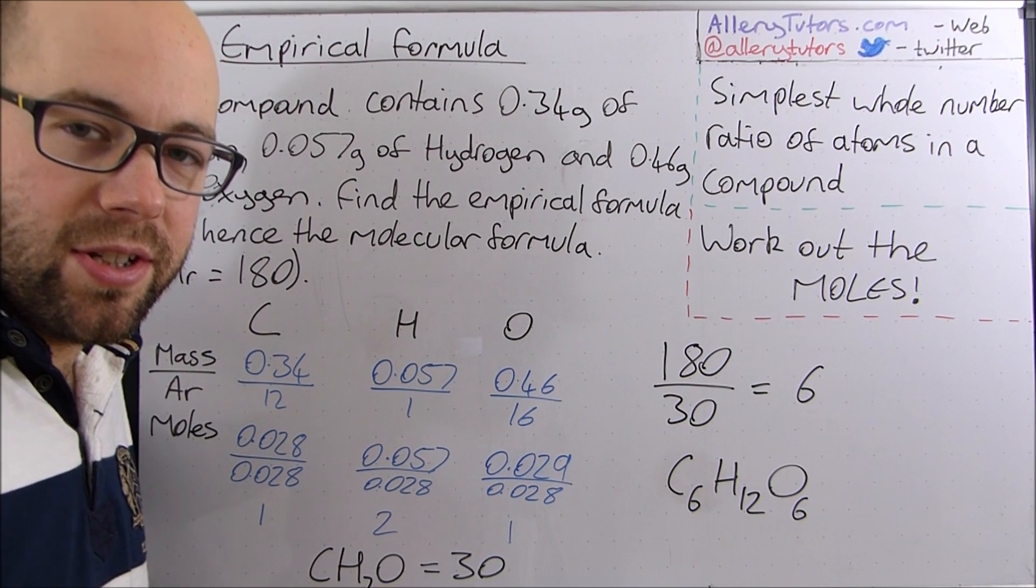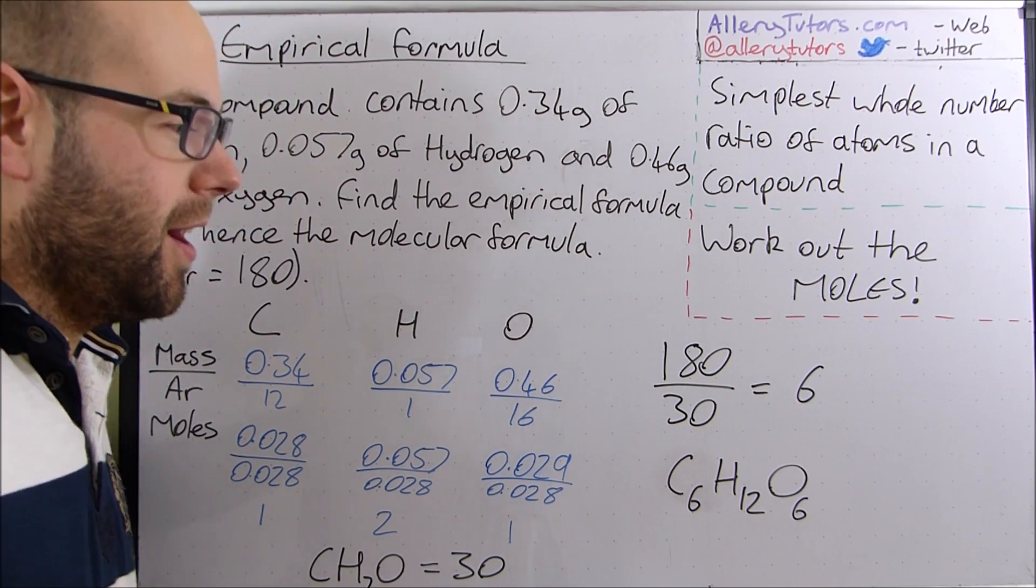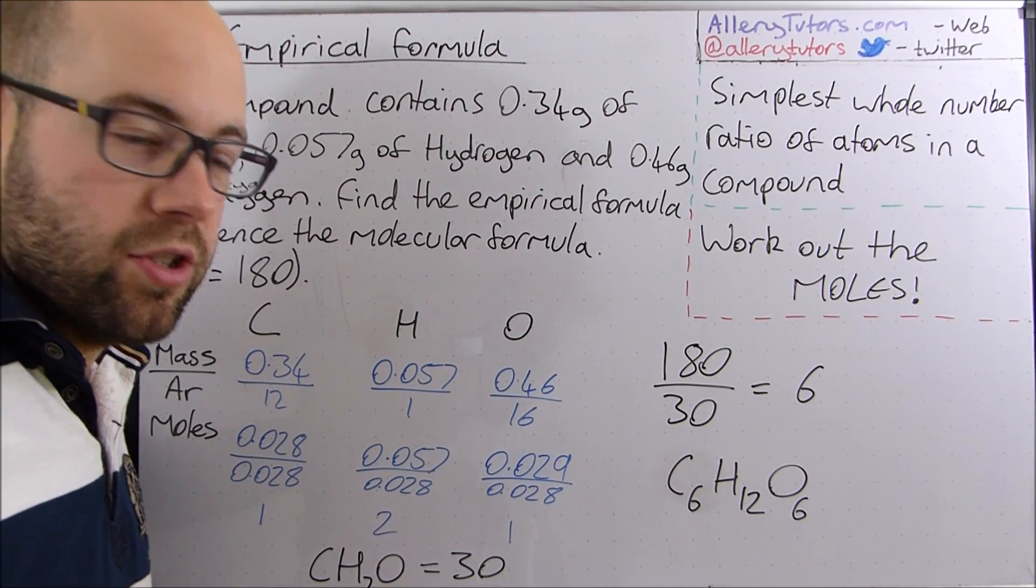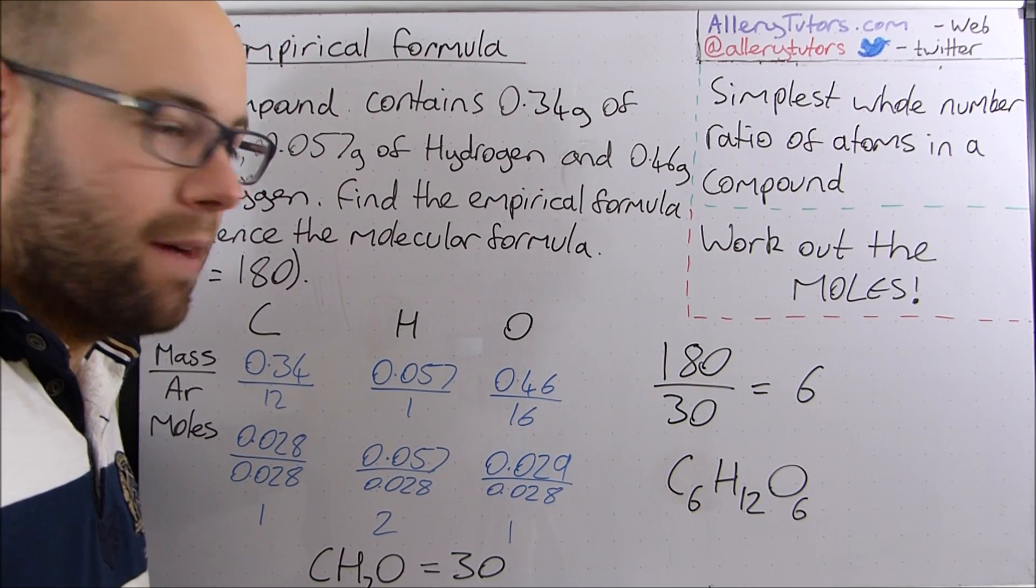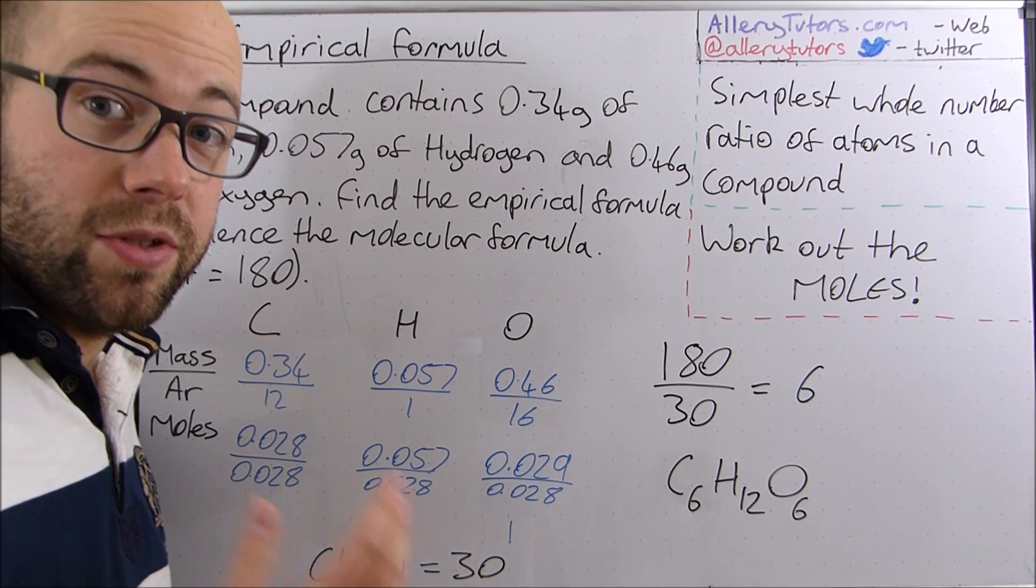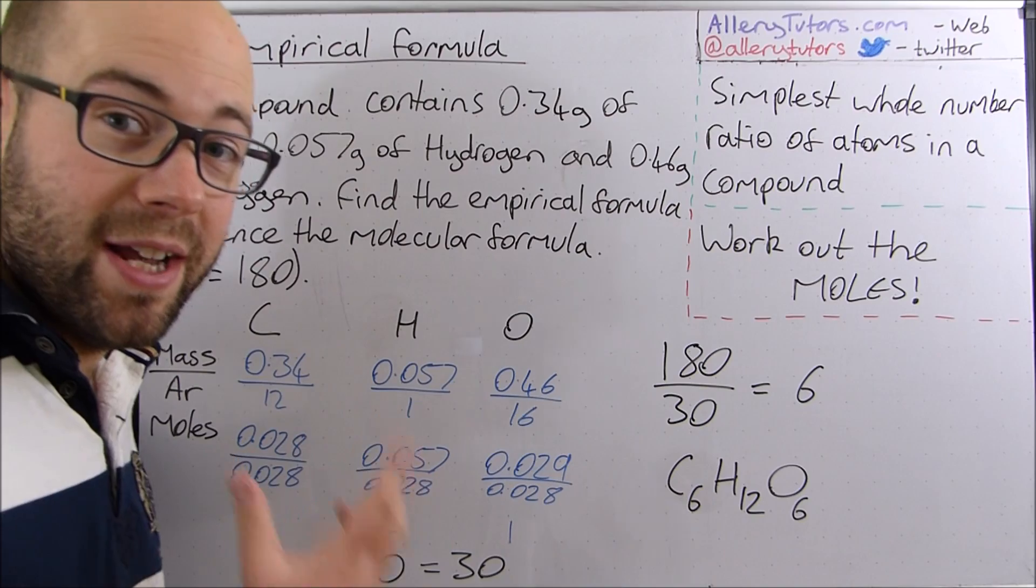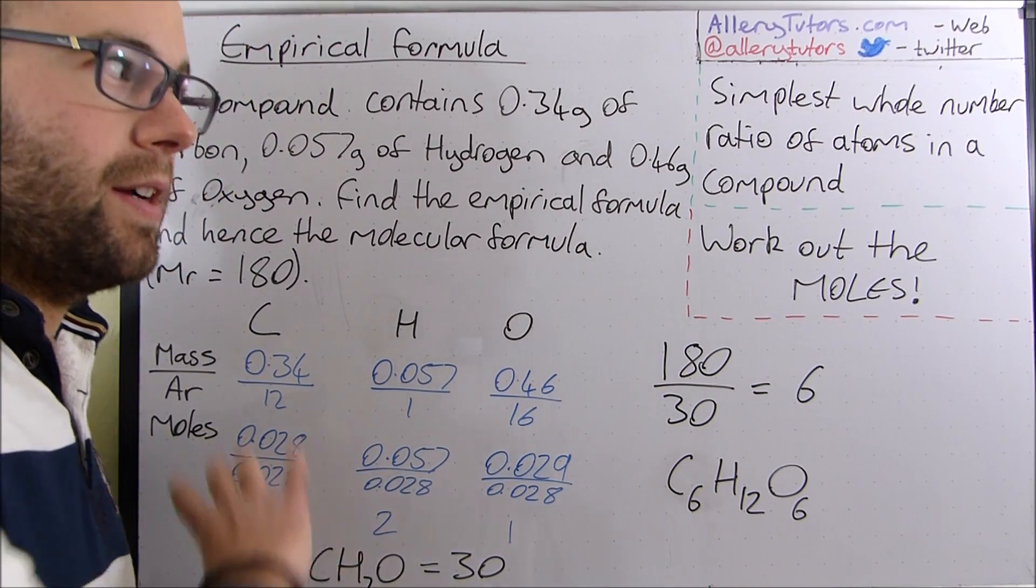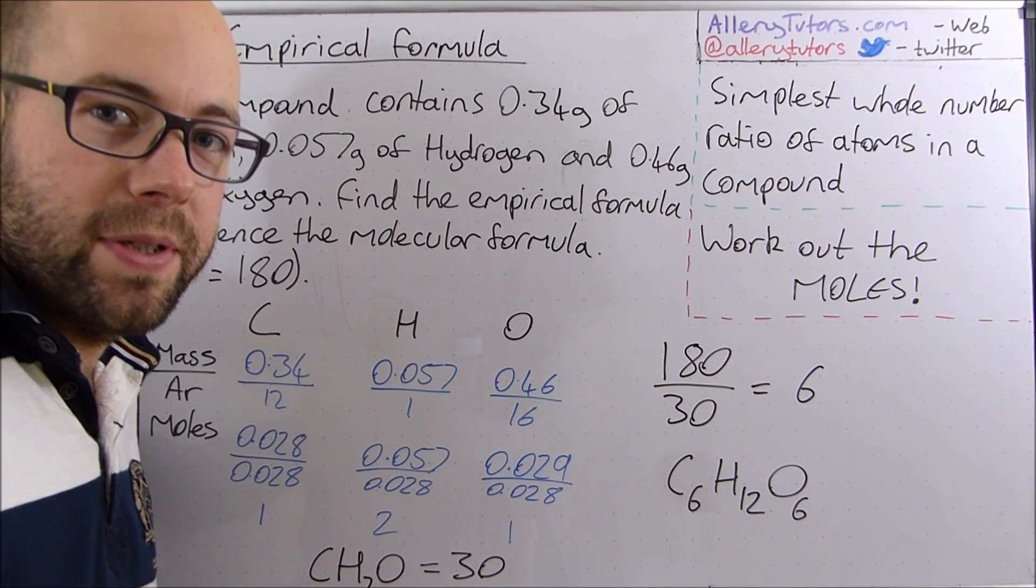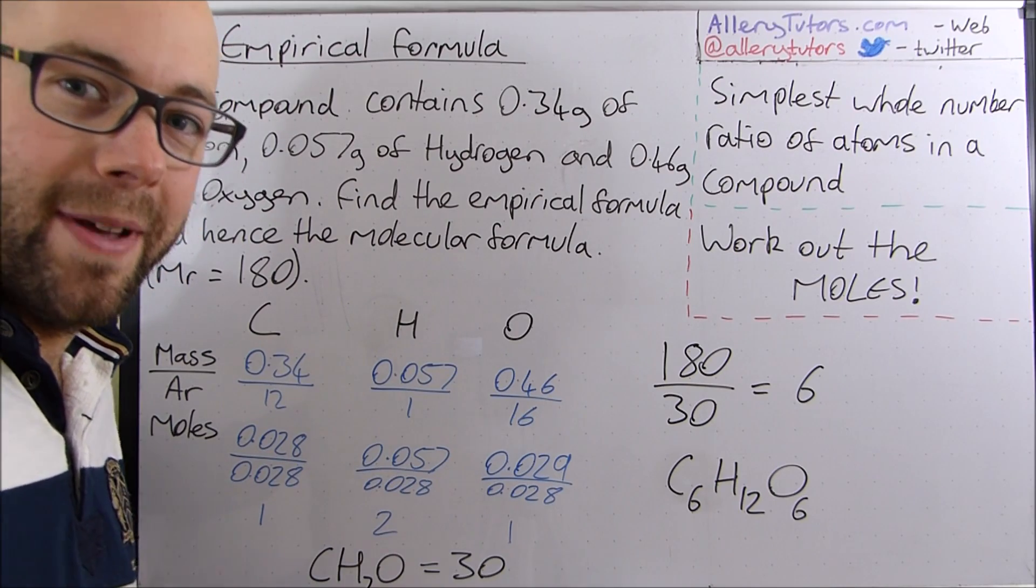Now the biologists amongst us will probably recognize that molecule as glucose and so actually from this bit of information here we've managed to deduce the molecular formula of a compound. Obviously knowing the mass of the full molecule, this can be obtained from a mass spectrometer so actually we're making links between mass spectrometry and empirical formula but there we go that's it that's empirical formula as simple as that. Bye-bye.